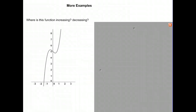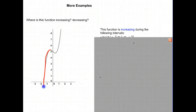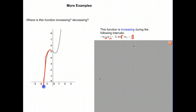Some more examples. Where is this function increasing and decreasing? Going from left to right, you'll notice that it is increasing from negative infinity all the way to approximately negative 0.5. The way to express that is x is greater than negative infinity and less than or equal to negative 0.5. Using rounded brackets for negative infinity and a square bracket for negative 0.5 since it is equal to that value — that's the interval where it's increasing.